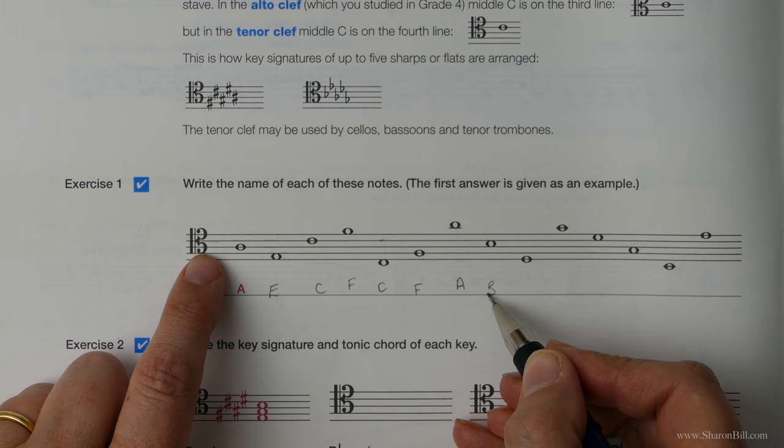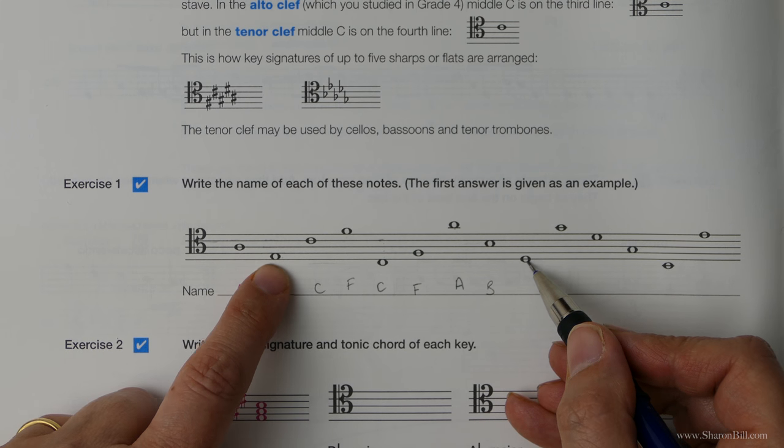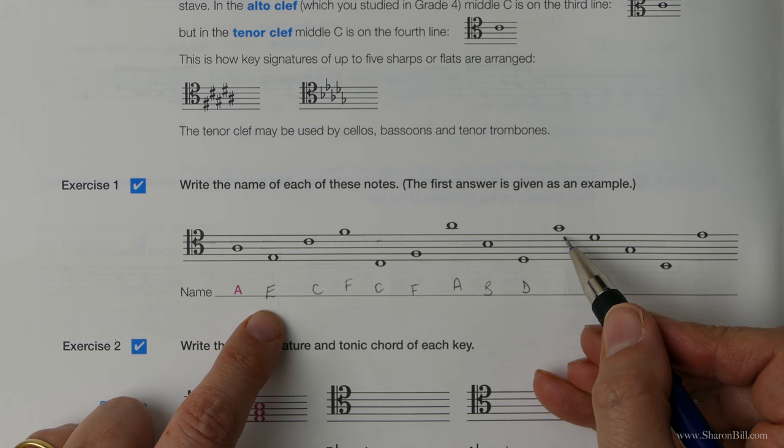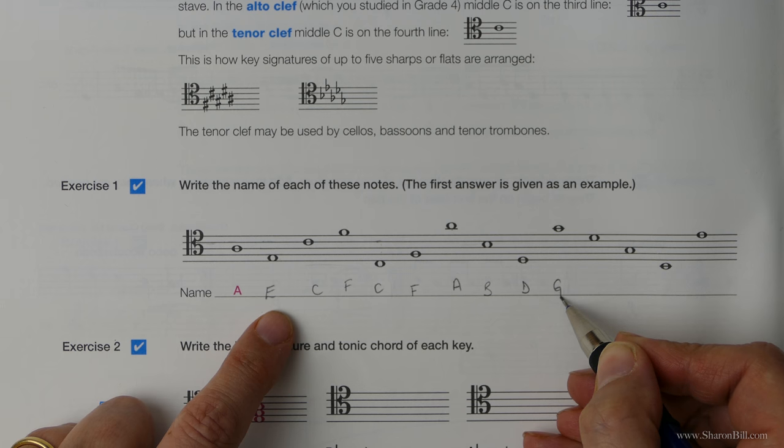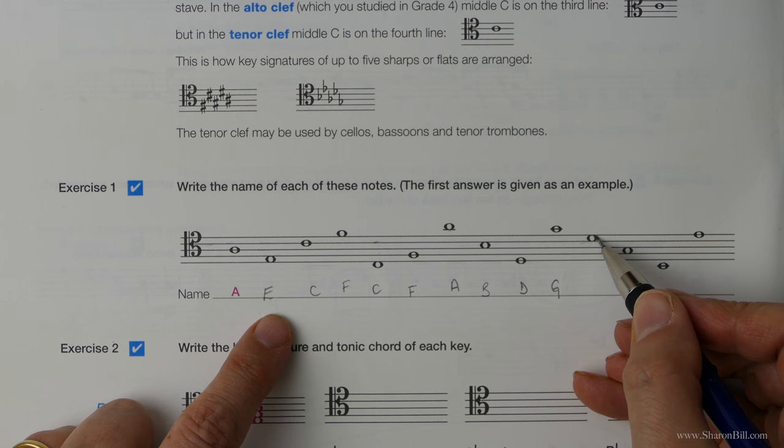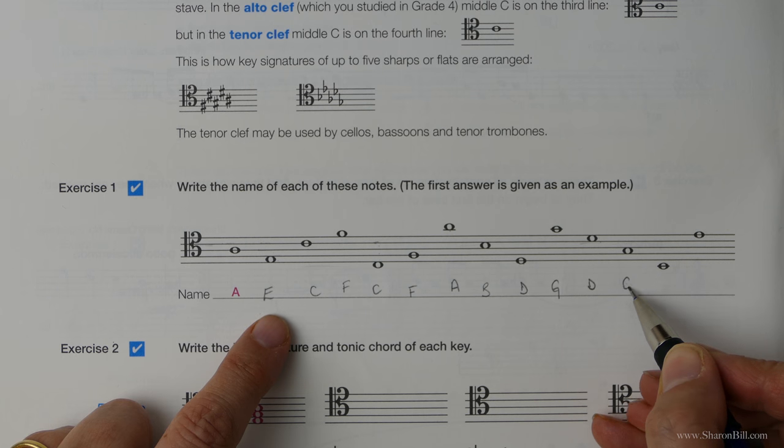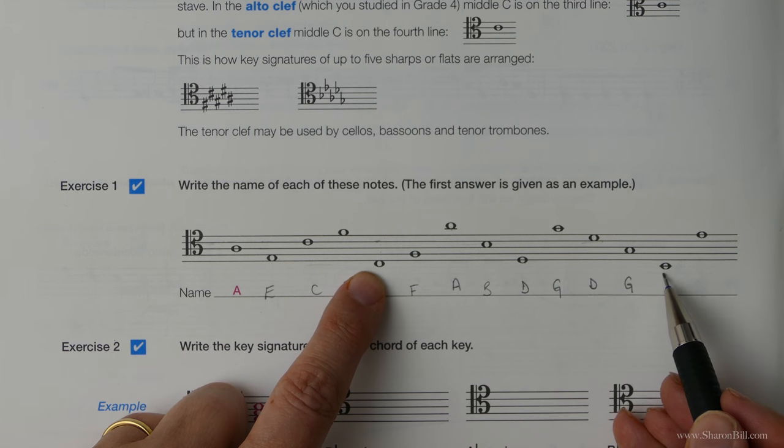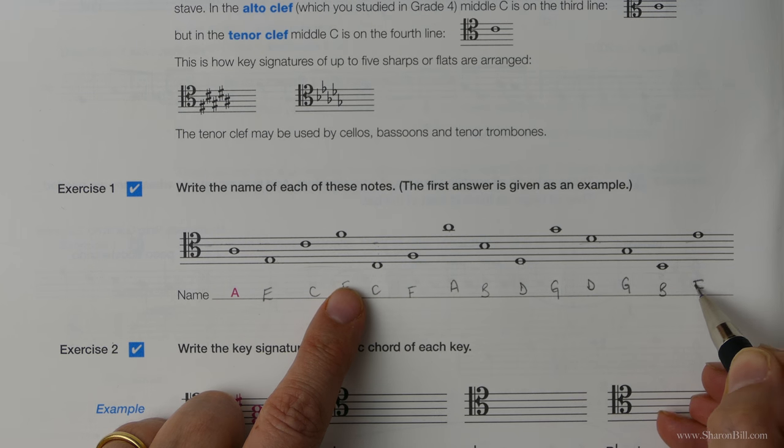So we think there's C, B. This one must be a D, just counting down from this E. This one is a G. F, F the space, G is the line. This one is D, one above middle C. This one here is a G: C, B, A, G. This one here, we've got one below the C, that must be a B. And then here, C, D, E. There we go.